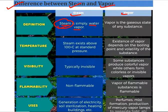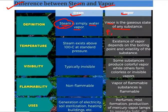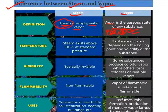But vapor is the gaseous state of any substance. It could be petrol, gasoline, benzene, or any other substance. Whatever vapor it is, it is the gaseous state of any substance. It may be flammable or inflammable.